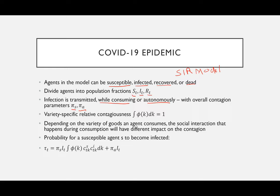You can either be infected while studying, working, or consuming in a social area with other infected people, or you might just be walking down the street and by some unfortunate event get infected — that's pi_A. There's also a variety-specific relative contagiousness given as the integral of phi(k) dk equals one. The idea is that depending on the variety of goods an agent consumes, the social interaction that occurs will have a different impact on contagion. If a person goes into many different places to consume goods, they are likely at higher risk of getting infected.